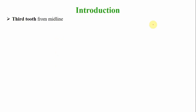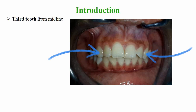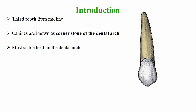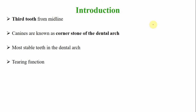The maxillary canine is the third tooth from the midline. Canines are also known as the cornerstones of the dental arch. They are the most stable teeth in the dental arch, probably because of their shape, and they have the longest root in the dental arch. The basic function of a canine is tearing — incisors cut food, canines tear it, and premolars and molars grind it.